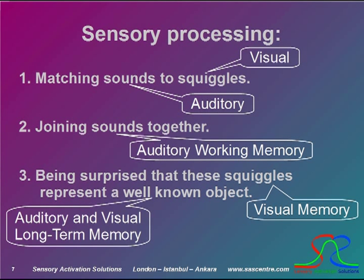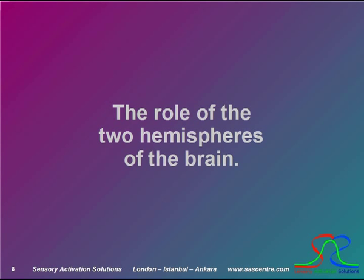If we stay with this simplistic example, what sensory processes are activated in the brain to be able to do this? Firstly, we see the squiggles with both eyes — a visual process. Then we have to match each squiggle to a sound — an auditory process. Then we have to store and recall those sounds from memory to form a whole word. And then we have to match the sound of that word and those squiggles to an object that we already know, both visually and as a spoken word.